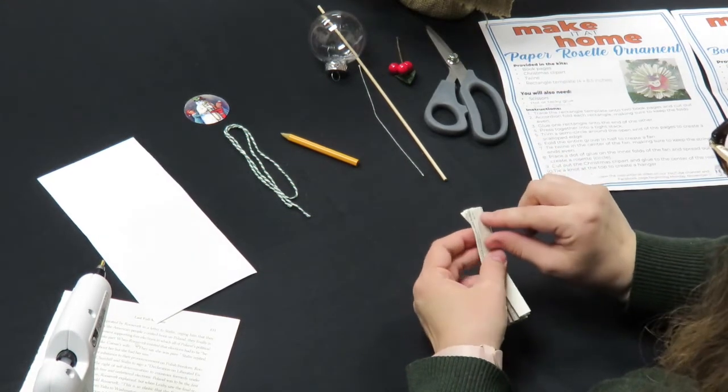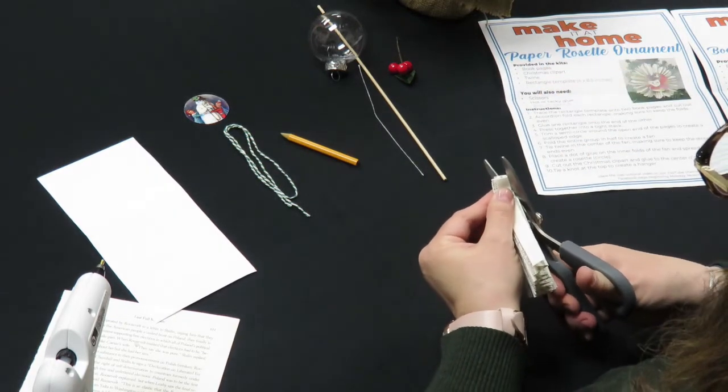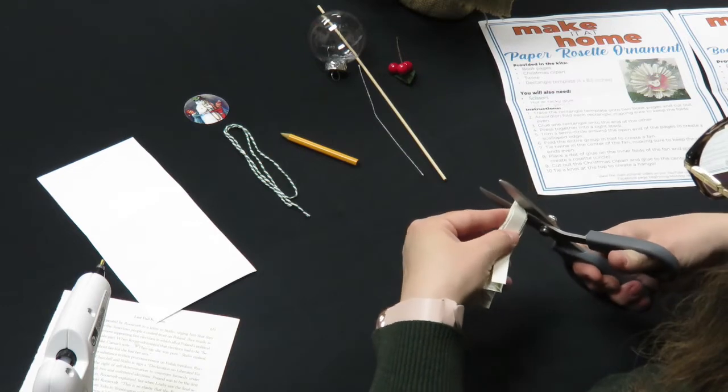And you're going to trim a semicircle around each end of the open page. This is going to give you a scalloped look for the edge of your rosette.